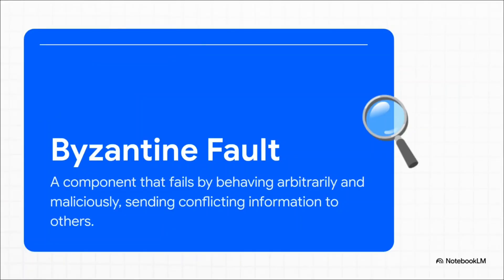A Byzantine fault is not just a server going offline—that would be easy. This is a server that's actively trying to sabotage everything. Imagine it tells one part of your network everything's cool, but at the exact same time it's telling another part emergency shutdown. It lies, and it can lie in totally random, malicious ways, which makes it by far the hardest kind of failure to deal with.